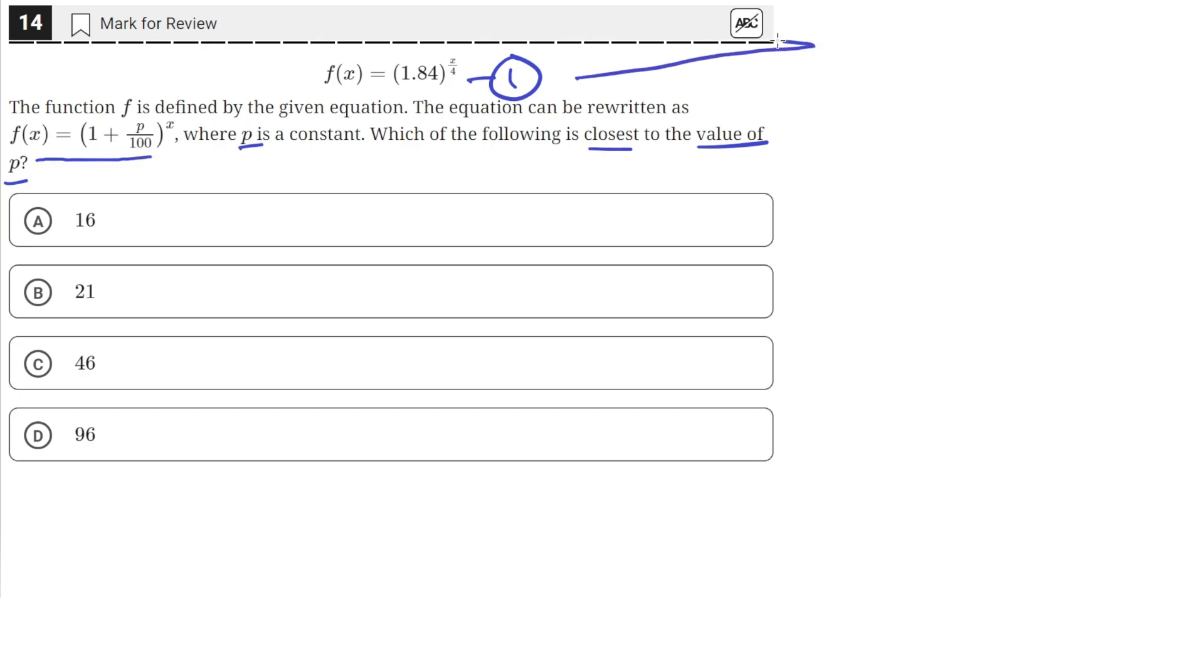So let's rewrite equation 1 to have just x as the exponent. We know that 1.84 raised to the x over 4 can be rewritten as 1.84 raised to the 1 fourth, and then raised to the x power. When you have an argument being raised to two powers, the powers multiply, and x times 1 fourth equals x over 4.